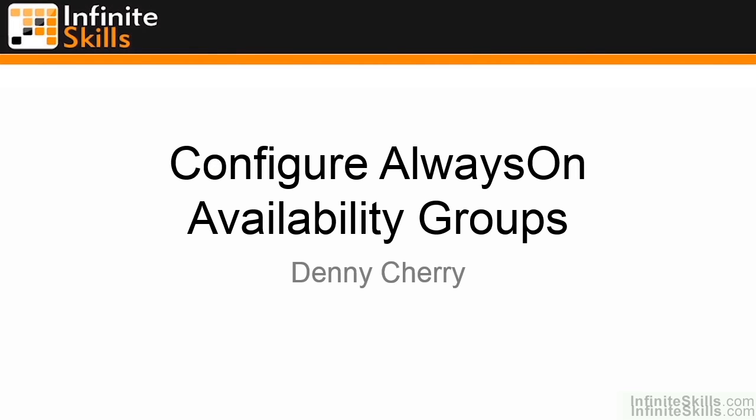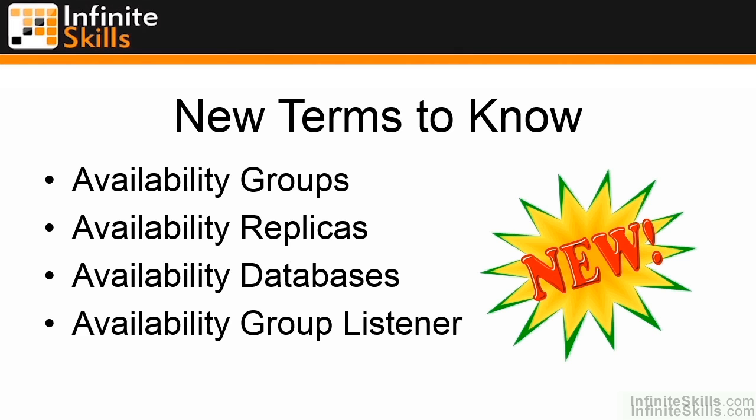Welcome to Configure Always-On Availability Groups. Before we can set up an Always-On Availability Group, there are four new terms we need to know: Availability Groups, Availability Replicas, Availability Databases, and Availability Group Listener. I'm going to start from the bottom of this list and work my way up.